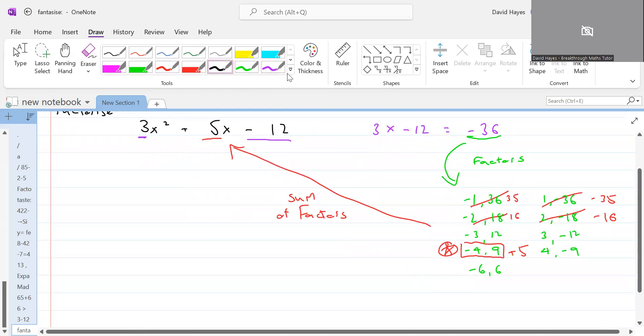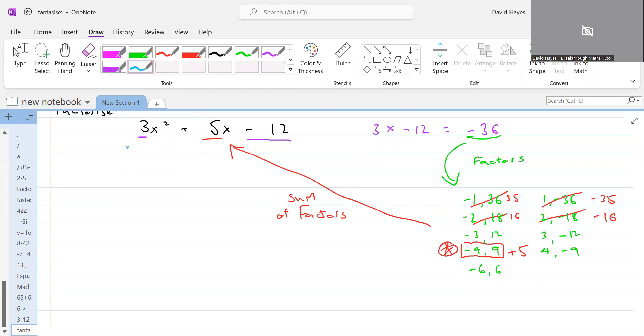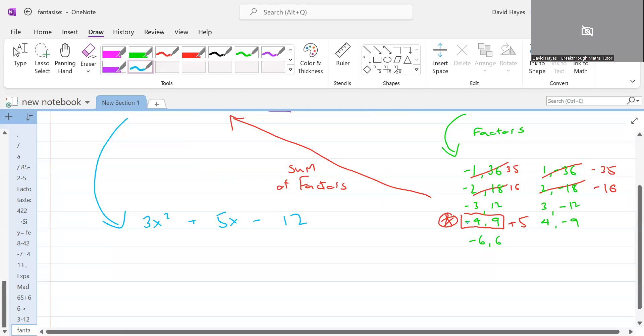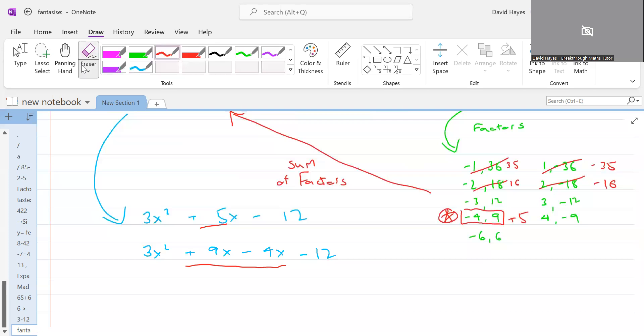So now if I bring this whole thing down here and write it out again as 3x squared plus 5x minus 12, however this time I'm going to rewrite the middle term in terms of these factors that I just picked. So rather than 3x squared stays the same, but rather than writing plus 5x, I'm going to write plus 9x minus 4x. So this and this are the same thing. I've just written them in terms of these factors. Plus 9x minus 4x would give me 5x as well, so I haven't changed the equation.